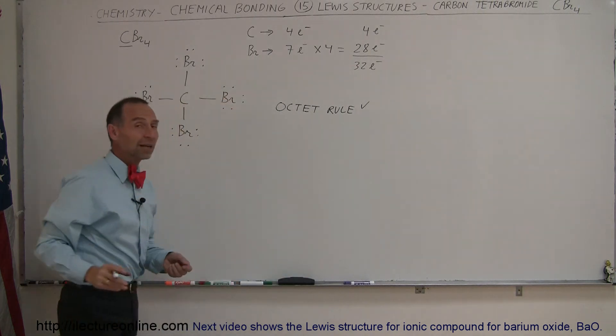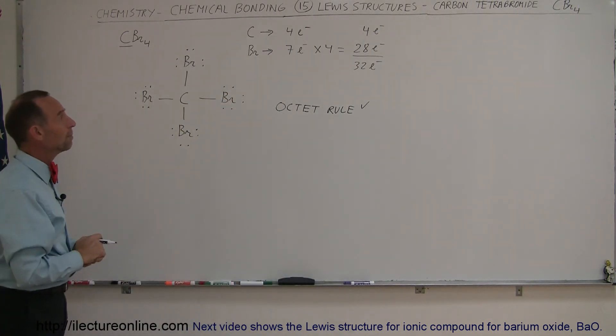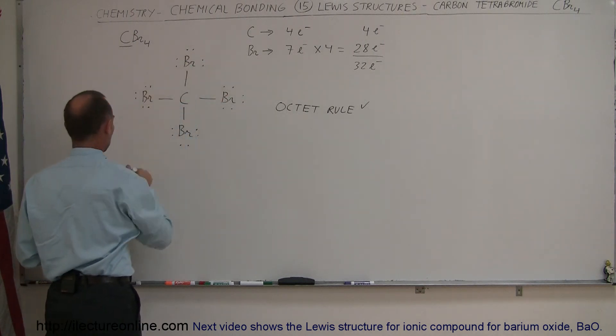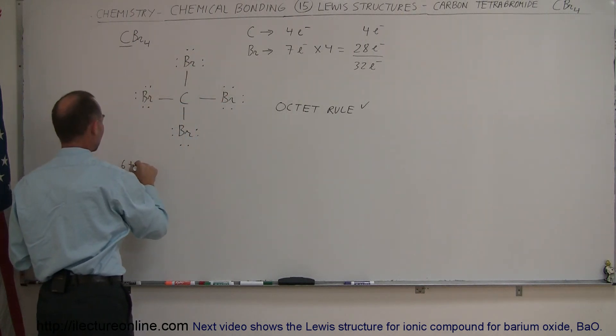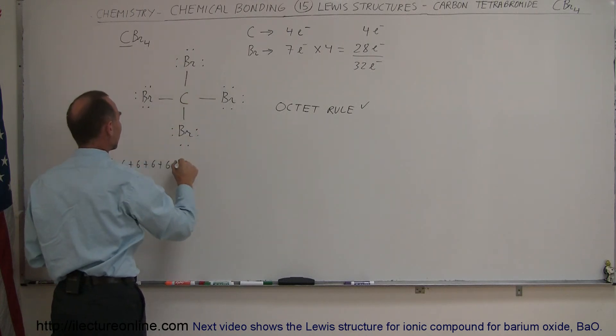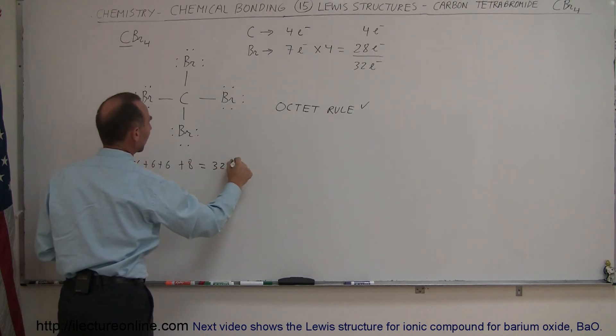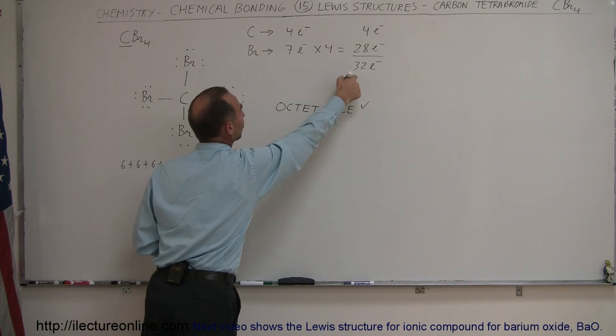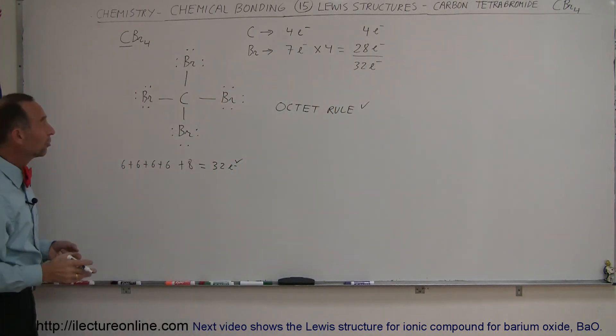And what about the free electrons? There's 32 that we can make bonds with. Let's see if the numbers add up. So each bromine has six electrons. That's six plus six plus six plus six. And then we have eight more electrons involved in the bonding plus eight. That is 24 plus eight, which is 32 electrons. And it looks like, yes, that matches the 32 electrons that were available. So we're meeting all the rules. And that looks like that's the Lewis structure for carbon tetrabromide.